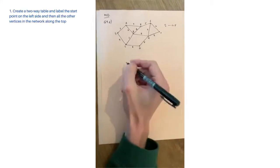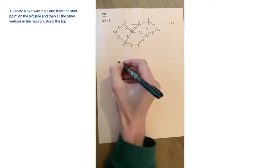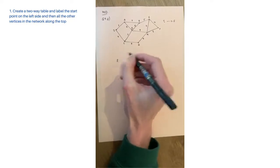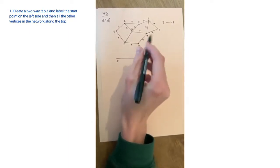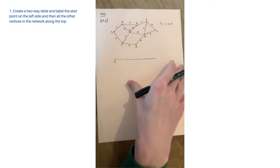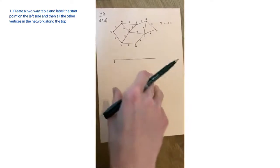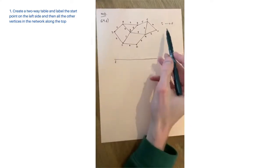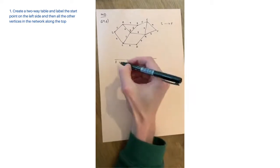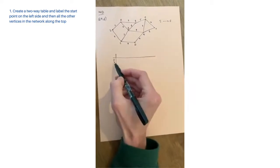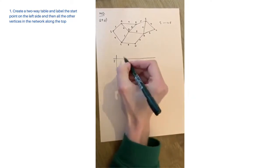What you want to do is start with your starting point and set up the actual table. In this one, this is question 9d from 14d, and they're saying that we want to start at S and finish at F over here. We put our starting point here and then every other point goes along here.